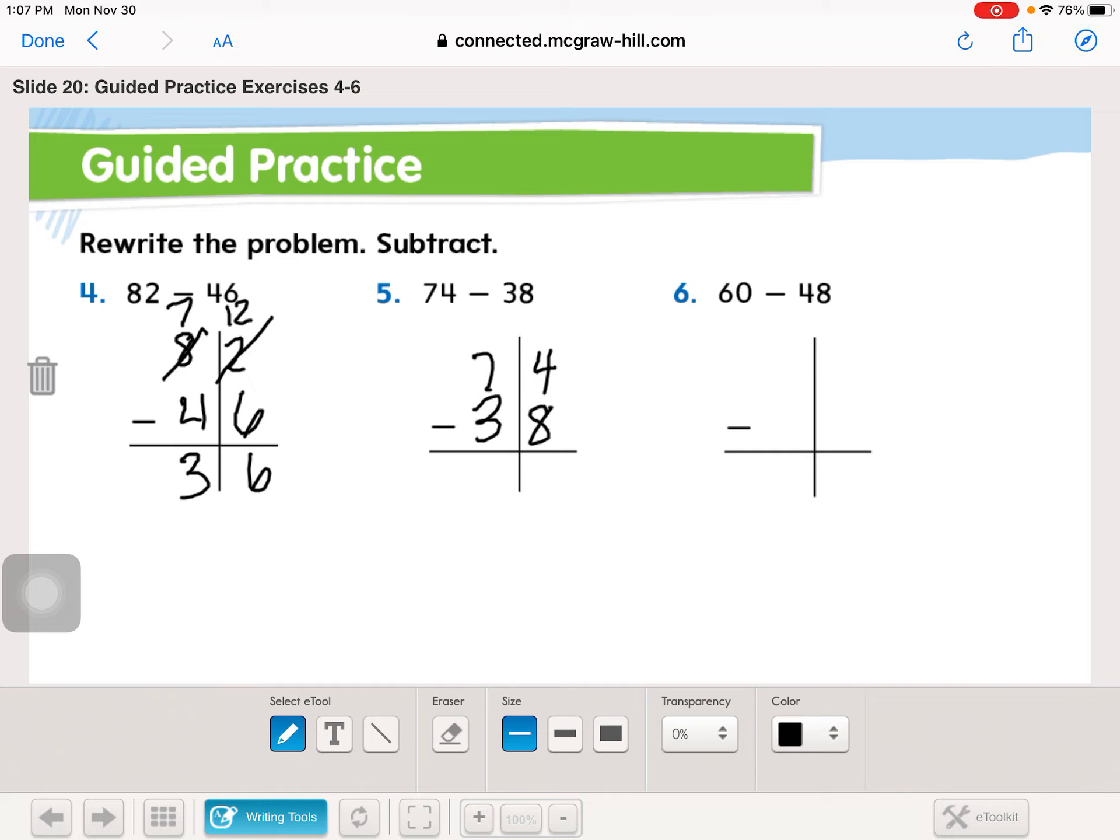More on the top, more on the floor. We have more on the floor. Go next door. Take a ten. Break a ten. 4 plus 10 is 14. 14 minus 8 is 6. 6 minus 3 is 3.